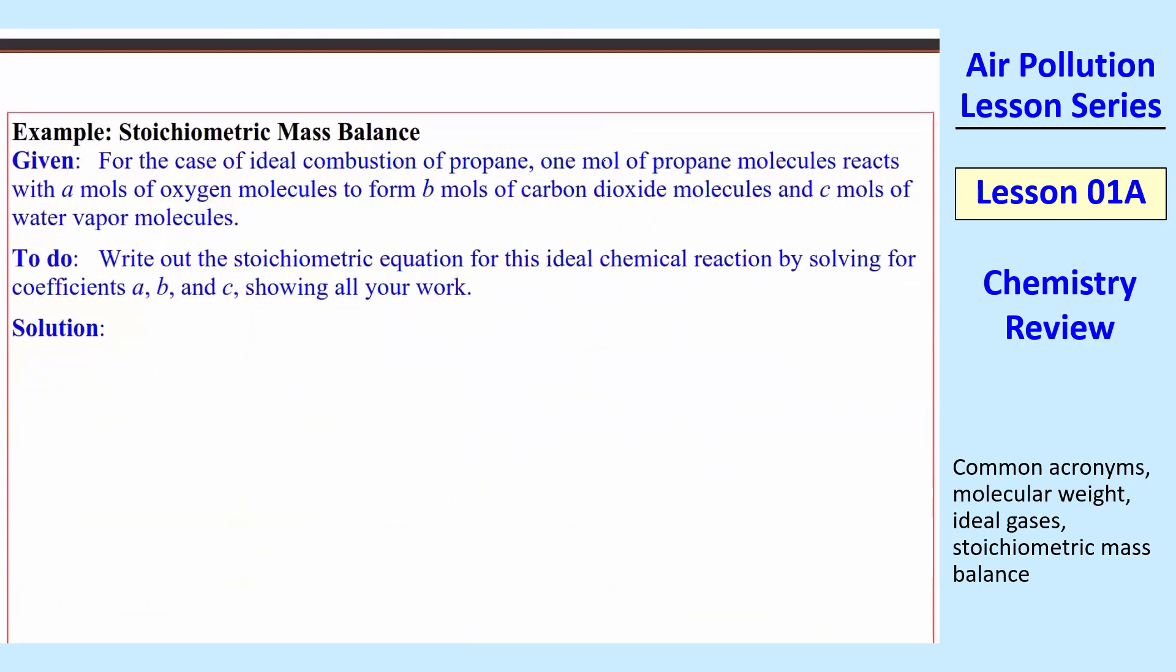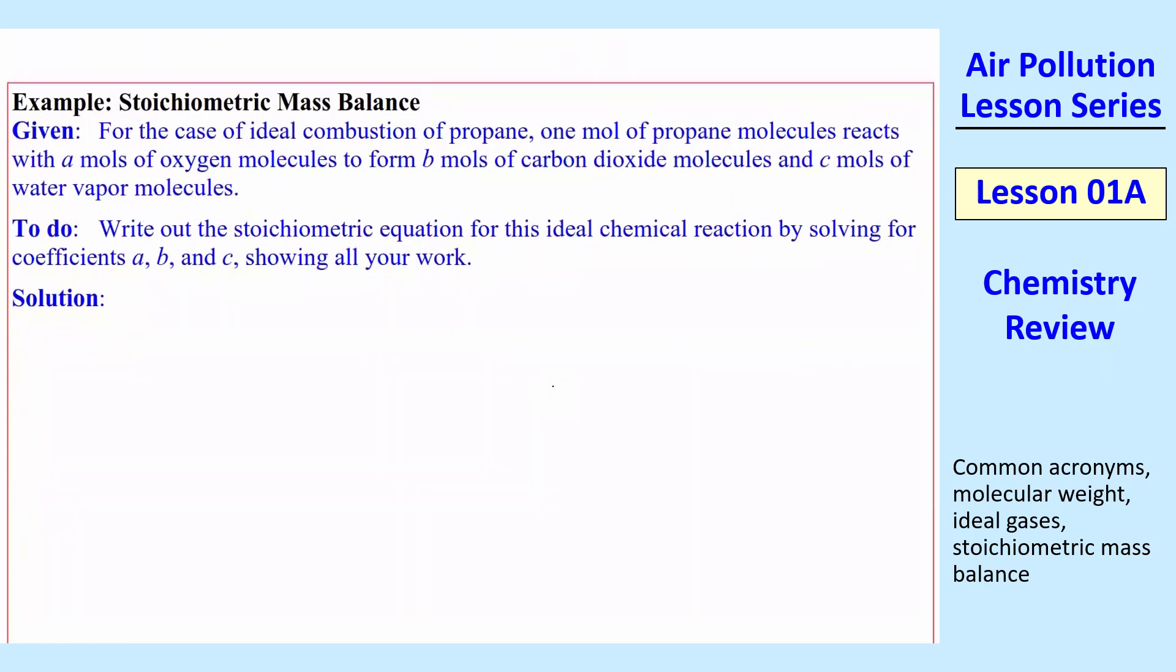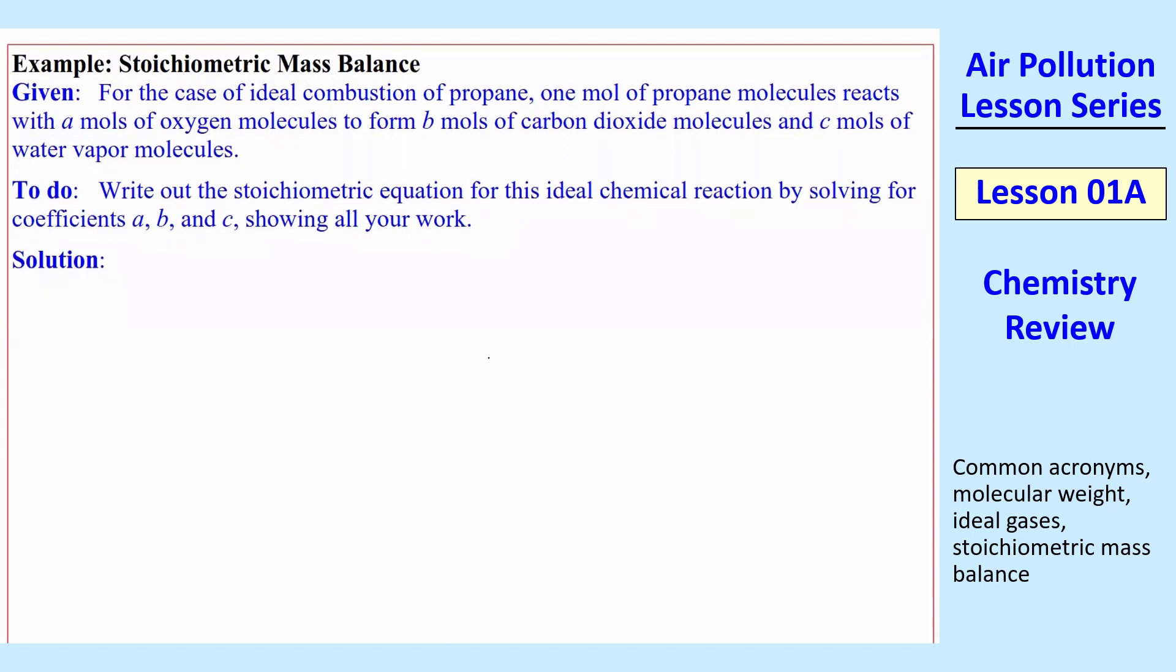You usually don't pick something like 3.821 for A. You pick a half or one or two typically when you have to pick one. So let me conclude with a simple example here. For the case of ideal combustion of propane, we have one mole of propane reacting with A moles of oxygen molecules to form B moles of carbon dioxide molecules and water vapor.